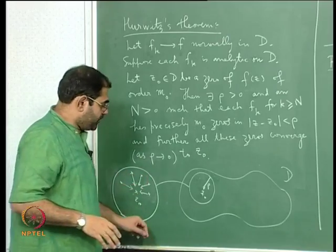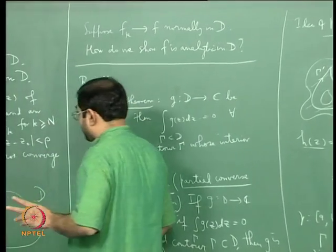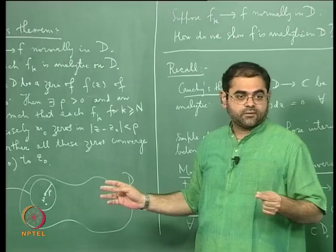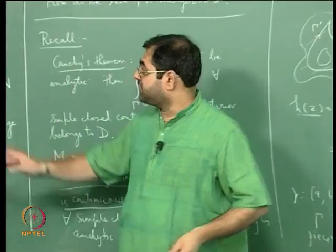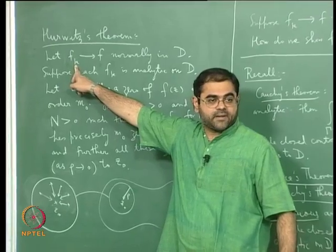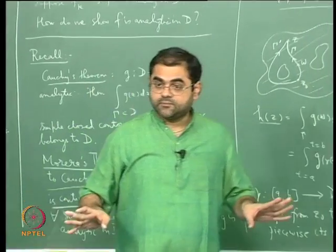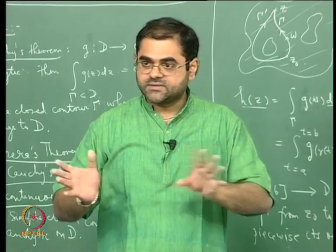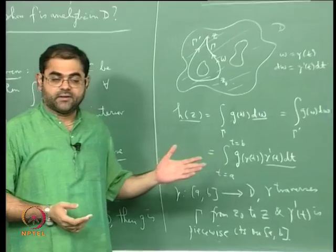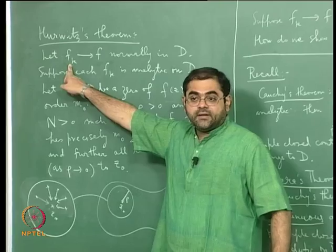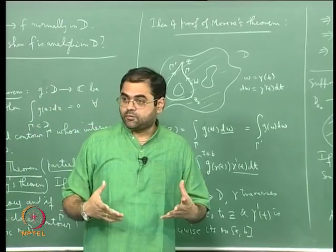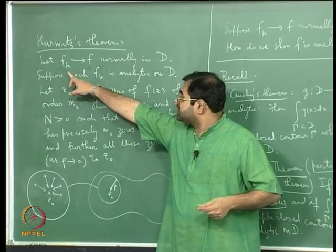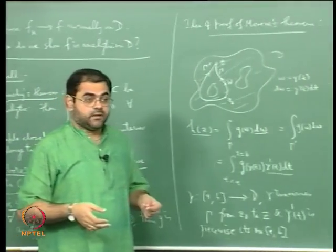So this is Hurwitz's theorem. One application of the theorem: using the theorem you can prove that if each f_k is one-to-one as a map, then the limit function f, if it is non-constant, is also going to be one-to-one. Normal convergence is already something very strong because it is uniform convergence on compact subsets, and uniform convergence is a very powerful thing. We proved in the last lecture that since each f_k is analytic, f is also analytic — that was because of uniform convergence on compact subsets, due to an application of Morera's theorem.